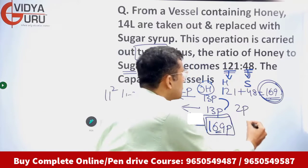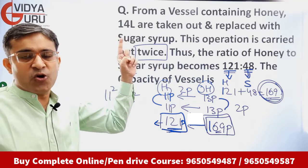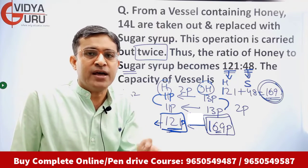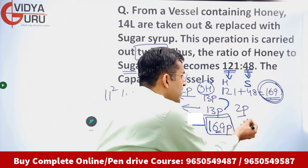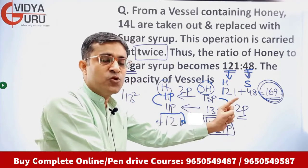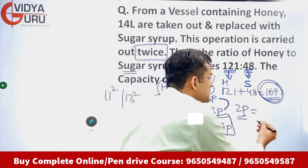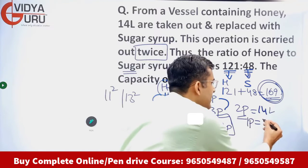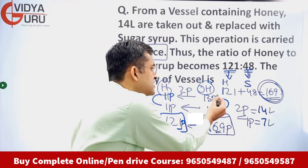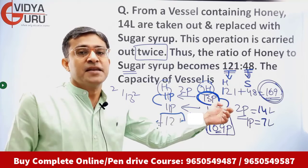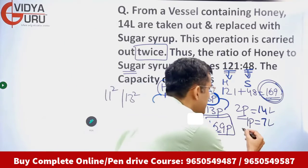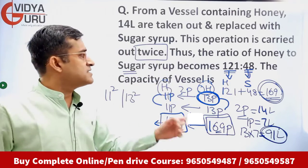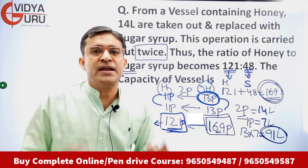This 2-part change corresponds to 14 liters, since we replace 14 liters of honey each time. So 1 part equals 7 liters. The original honey is 13 parts, so 13 × 7 = 91 liters. The vessel was of 91 liters capacity.